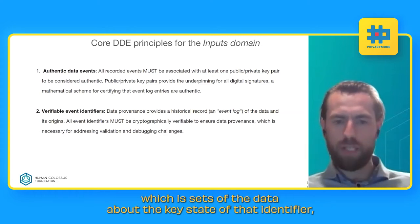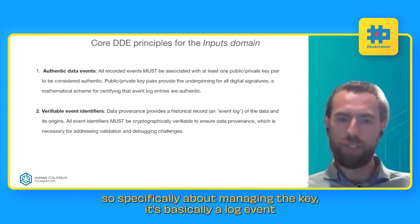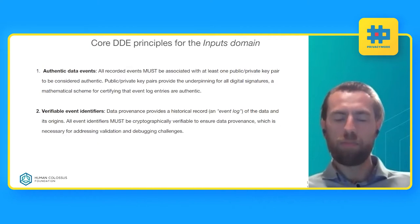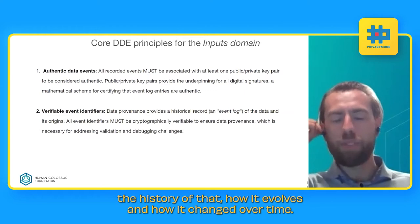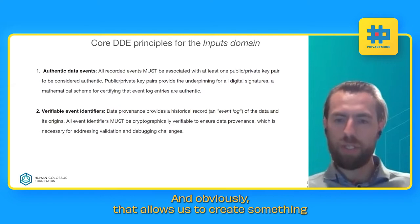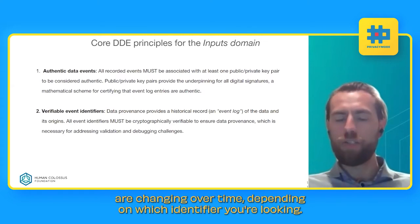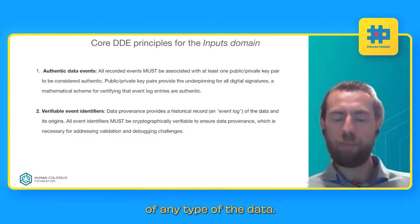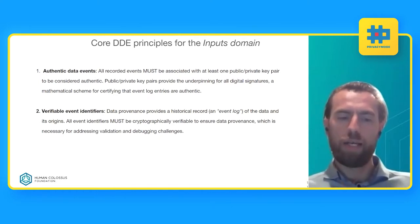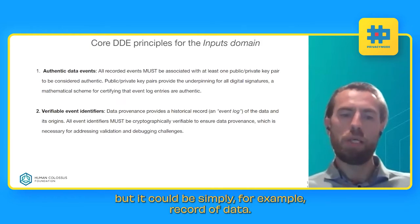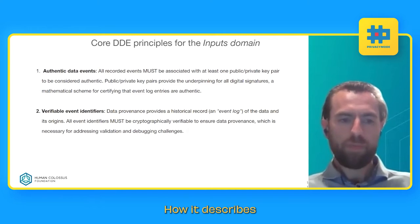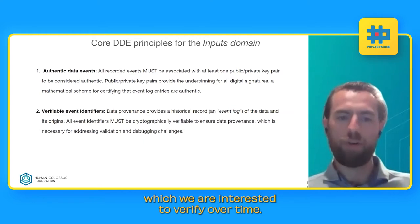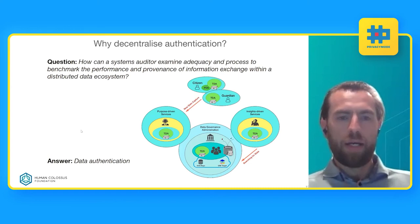An identifier is essentially a log of the key state — sets of data about managing that identifier's keys. For those familiar with blockchain technology, it's similar: cryptographically linked pieces of information that let you verify the history of how something evolved and changed over time. This allows us to create an event log showing how keys change over time. Importantly, the same technology can be used to track the history of any type of data — not just identification systems — for example, a record describing a specific object, a history of money flow, or any other events we want to verify over time.